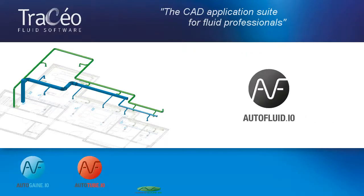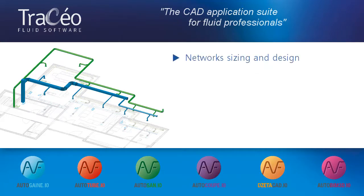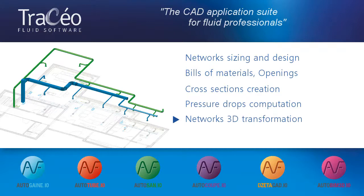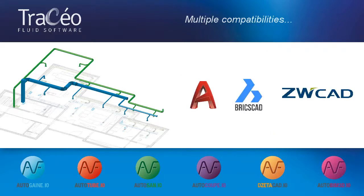The AutoFluid software solutions are dedicated to fluid engineering. They will allow network sizing and design, bill of materials, openings, cross-sections, pressure drops, computation, network 3D transformation and beam model implementation. The AutoFluid suite is compatible with AutoCAD, BricsCAD and ZWCAD.